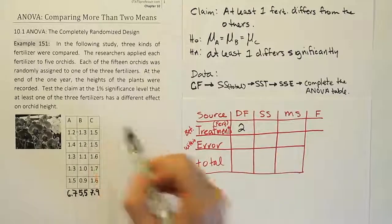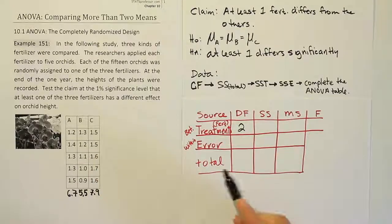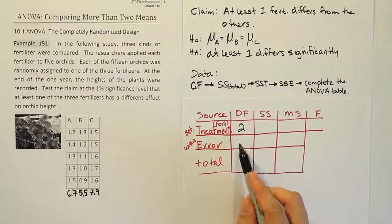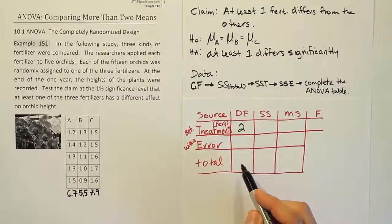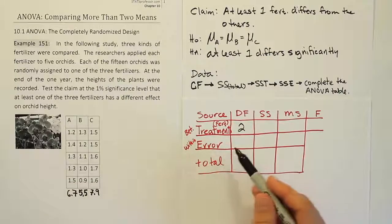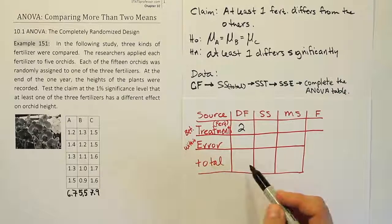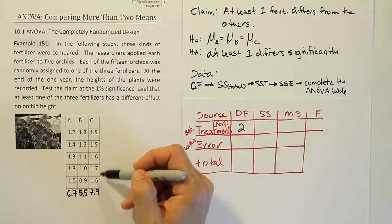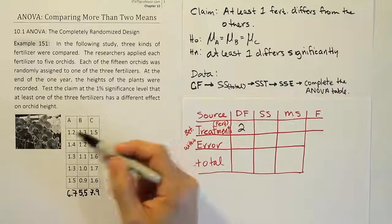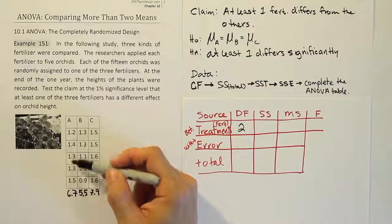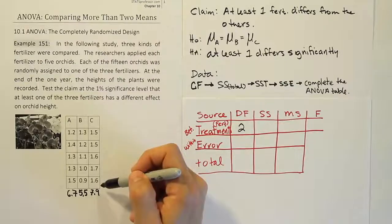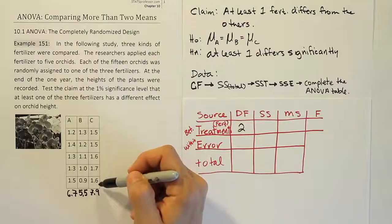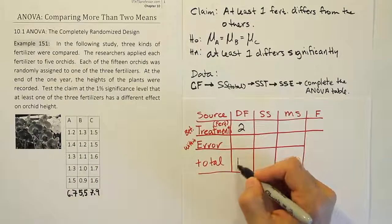There are three fertilizers. Take away one, you get two. Then we have the error degrees of freedom. We're going to do that in a moment. Let's get the total degrees of freedom first. It's going to make it easier to find the error degrees of freedom. The total degrees of freedom is basically the number of experimental units. In this case, the number of orchid plants that have been tested, right? Minus one. So how many different values do we have? Minus one. Well, there are 15 values in this table. You take away one, you get 14.